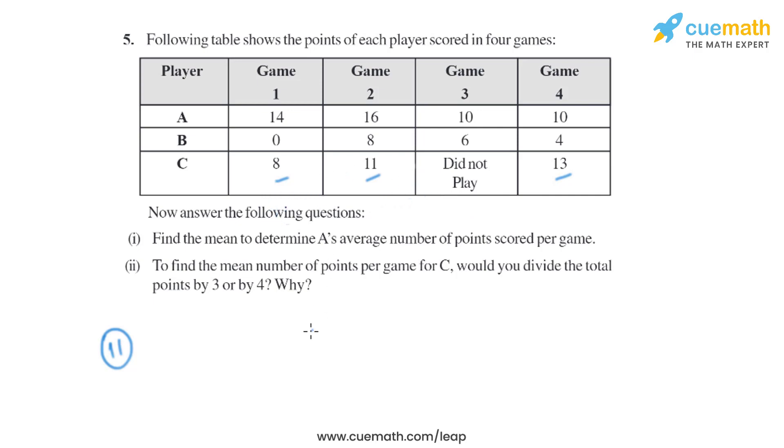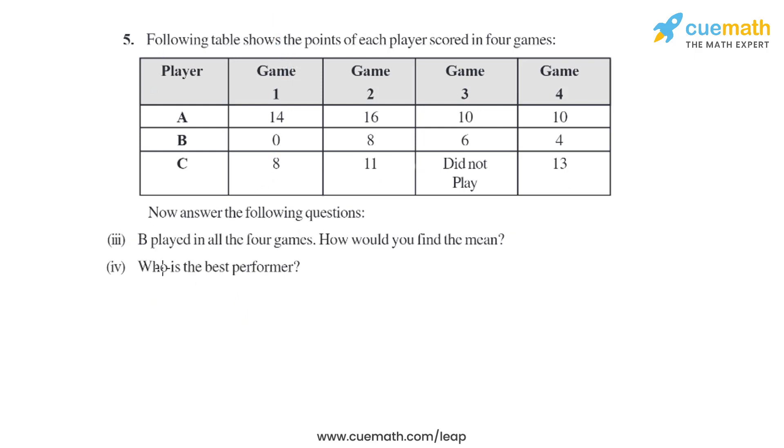The third and fourth part of this question says B played in all four games. How would you find the mean, and who is the best performer?